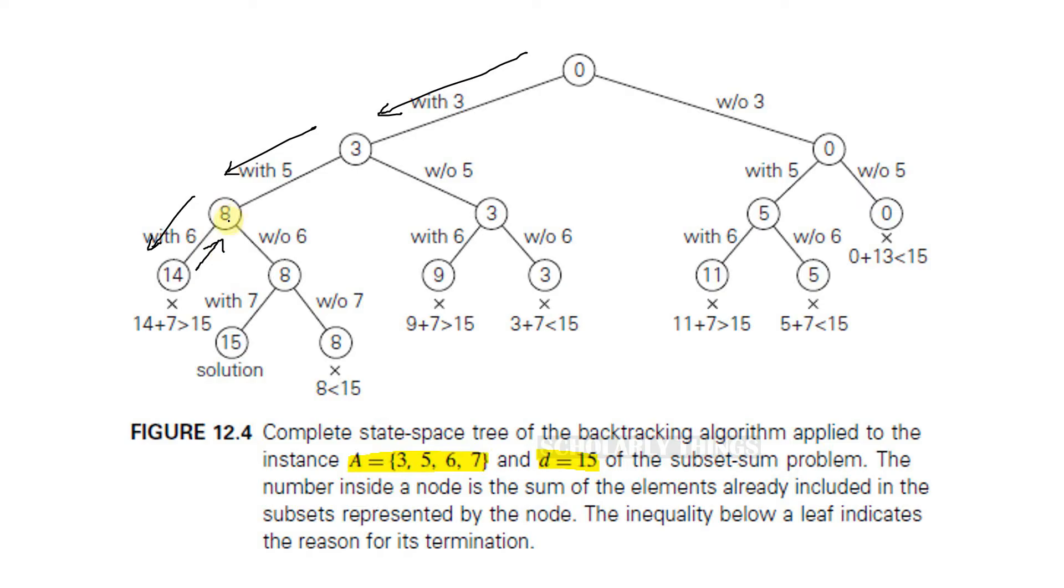Here the other option for us is to exclude 6. So do that. If you exclude 6, the sum is still 8. The next element we can choose is 7. So include it. 8 plus 7 is 15, which is equal to d. So we just found a solution.